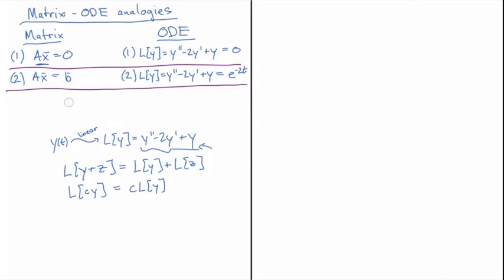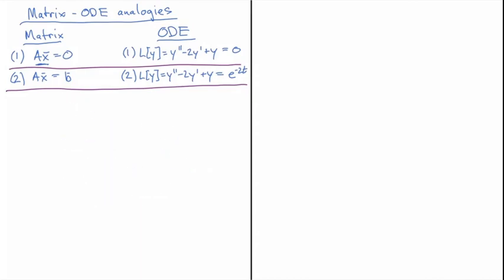The next observation about systems like this: when A is invertible, the only solution is x equals zero. But when A is not invertible, and I'm going to make the assumption that A is very not invertible in the sense that it has two rows or two columns that are dependent on the others.